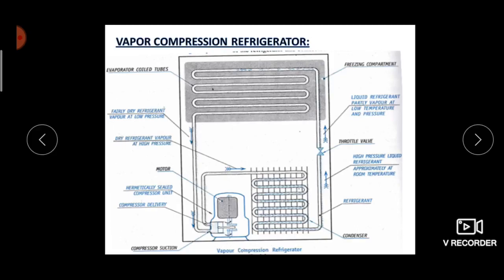The VCR system mainly consists of four parts. The first one is the evaporator, which is in the form of coiled tubes. The evaporator is connected to the compressor, and the compressor is connected to the condenser, and the condenser is connected to the expansion valve or throttle valve.